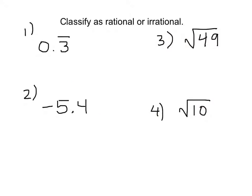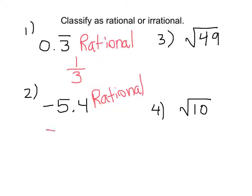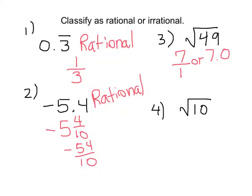Let's classify these numbers as rational or irrational — I encourage you to pause your video, look at your notes, and then restart to see how you did. The first example: 0.3 repeating. That is going to be a rational number because it has a repeating decimal, and that means we can write it as a fraction — 0.3 repeating equals one-third. Number two: negative 5.4. This is a terminating decimal, so this would also be a rational number. I could write this as negative 54 tenths.